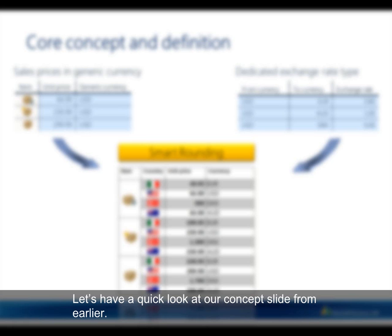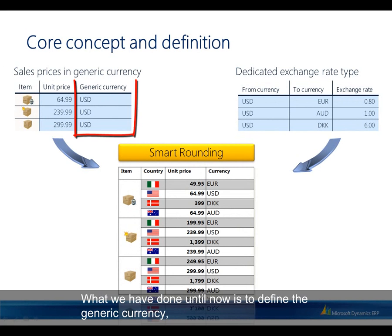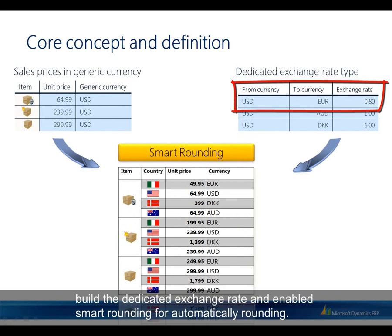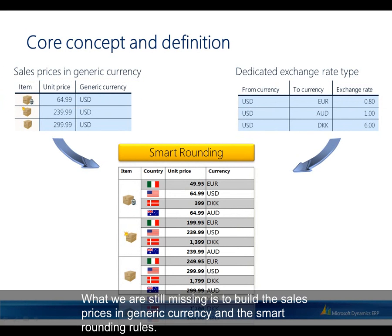Let's have a quick look at our concept slide from earlier. What we have done so far is define the generic currency, build the dedicated exchange rate, and enable smart rounding. What we are still missing is to build the sales prices in generic currency and define the smart rounding rules.